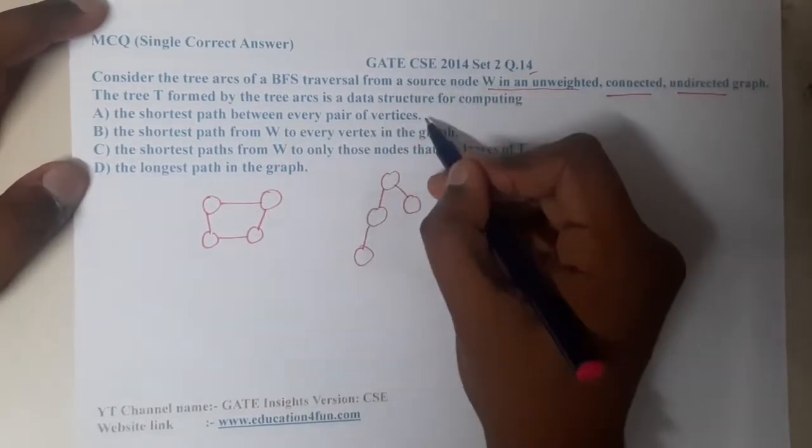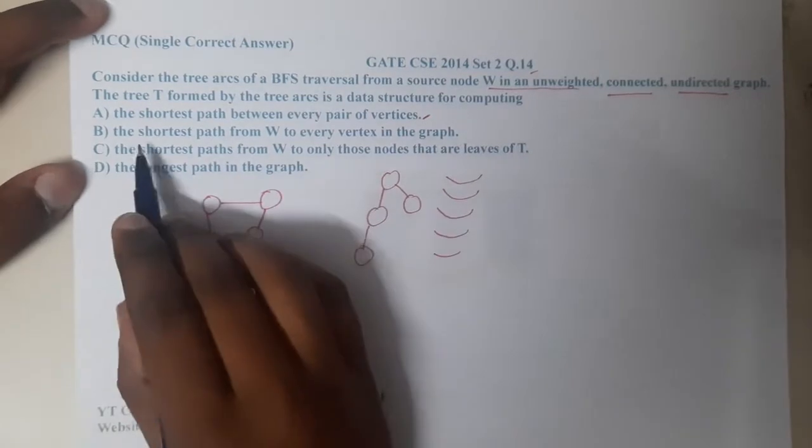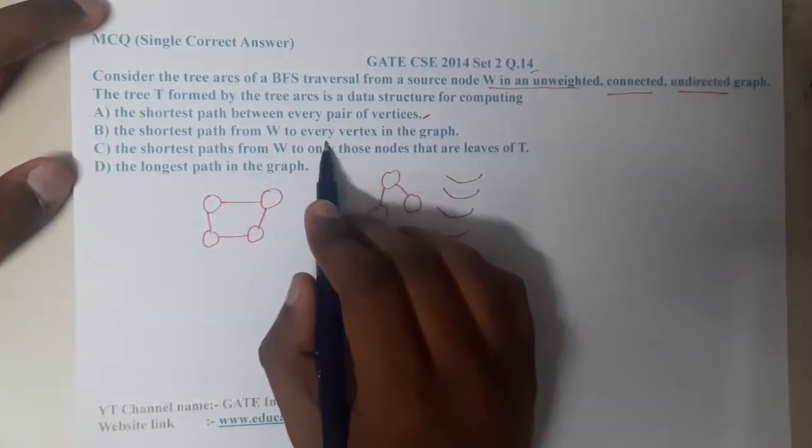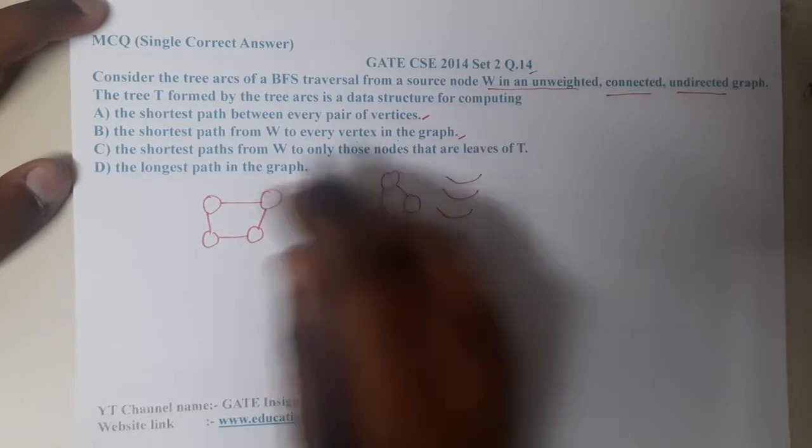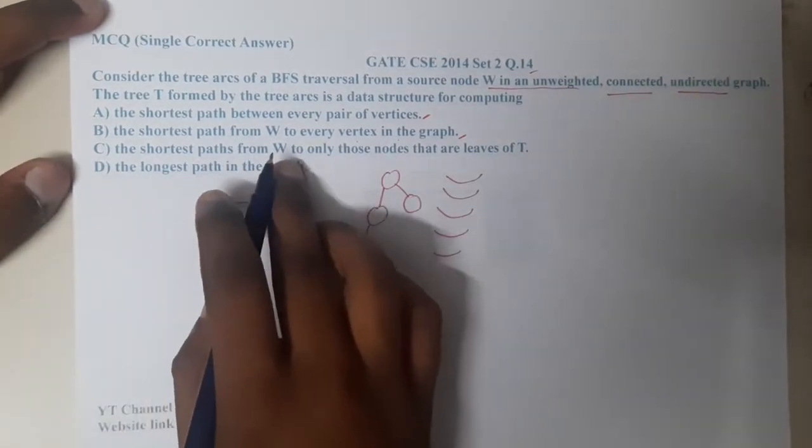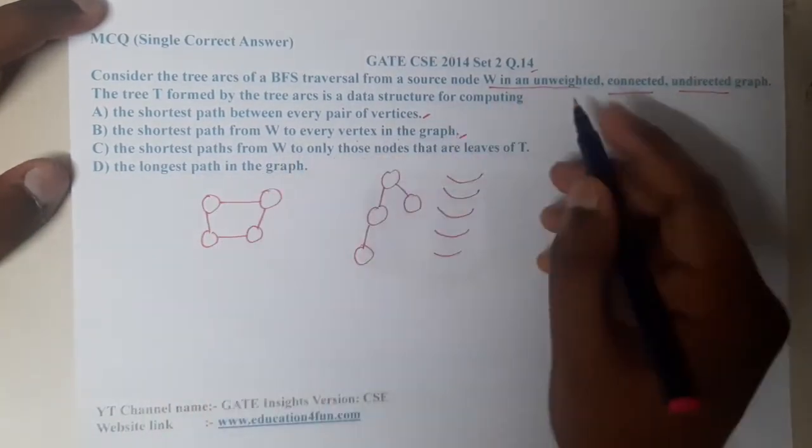Let us continue: the shortest path from W to every vertex in the graph. Similarly, the shortest path from W to only those nodes whose are leaves. The longest path in the graph.